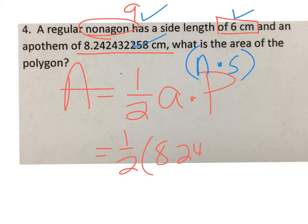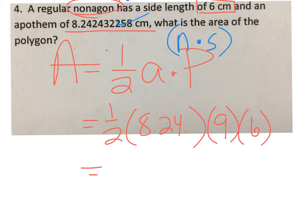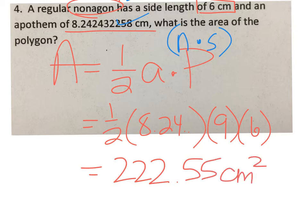So 8.2424, we have nine sides and every side is six units long. So when I plug all this into my calculator, I get an area of 222.55 square centimeters.